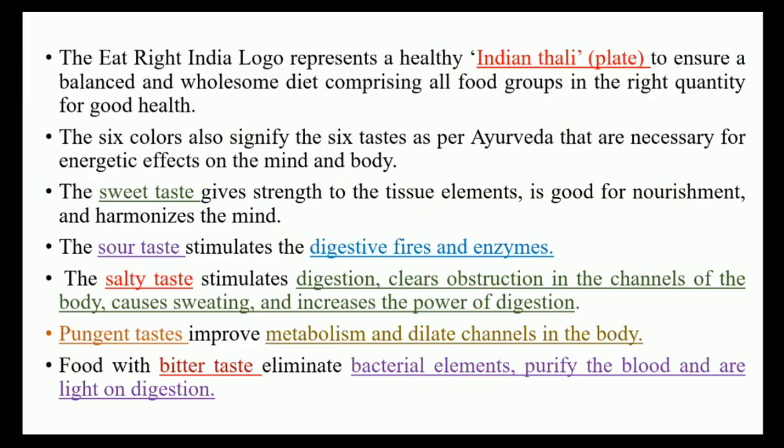Talking about taste, we majorly have six tastes. These six different colors also represent six colors according to Ayurveda, and all these six colors have different meanings corresponding to the six tastes. All the different tastes have an important and equal role in our body. For example, the sweet taste strengthens our tissue elements, is good for nourishment, and harmonizes the body. The sour taste is important for digestive enzymes. Salty taste stimulates and increases the power of digestion. The pungent taste improves metabolism. And the bitter taste eliminates various bacterial elements and helps in purification of blood. So these six different colors represent the six different tastes required by our body in equal amounts.